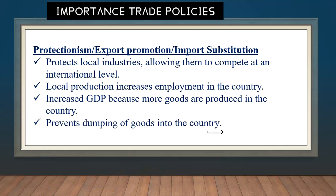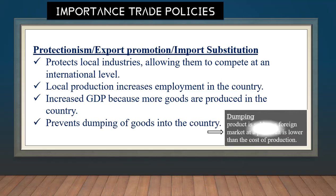Finally, trade policies prevent the dumping of goods into the country. Dumping is when a product is sold on a foreign market at a price lower than the cost of production. For example, if China sells goods to us at a cost lower than our own cost to produce those goods, that is called dumping.